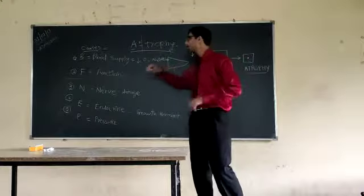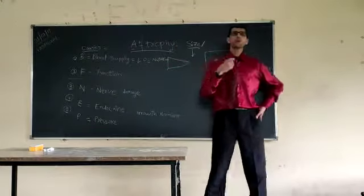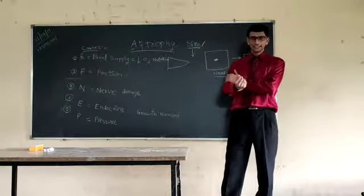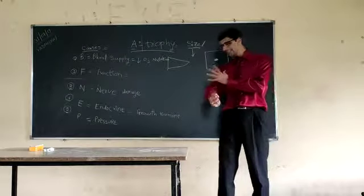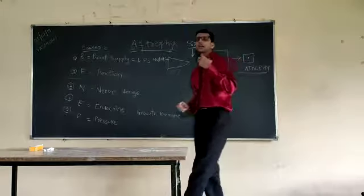Coming back second is functional. If we stop using any organ, it will gradually, size will reduce. It is also called a disuse atrophy.